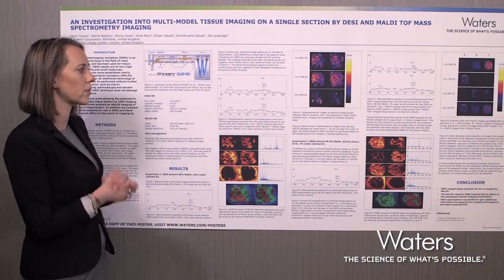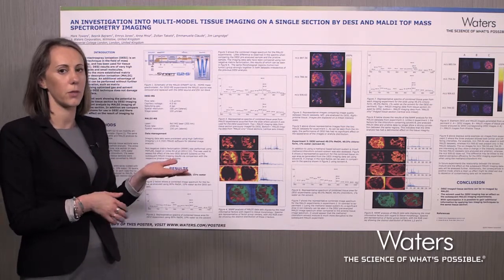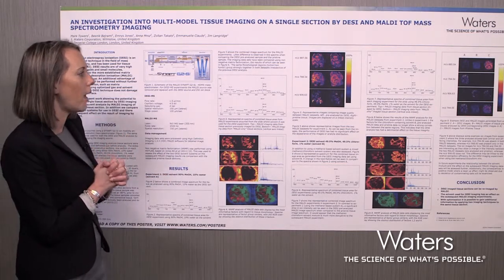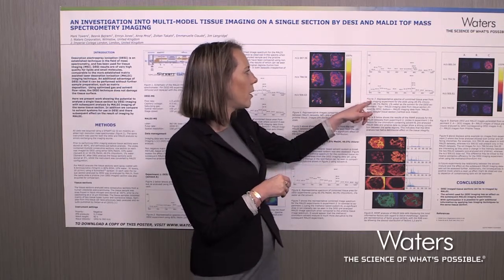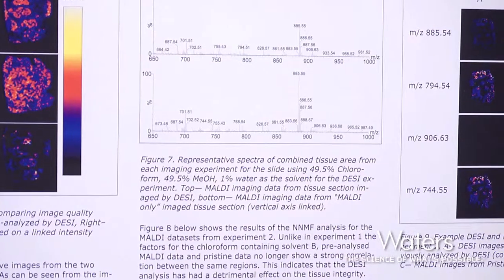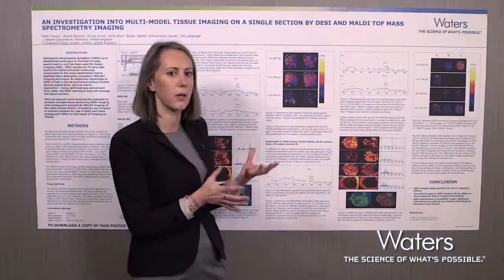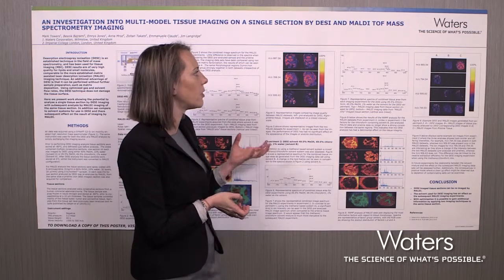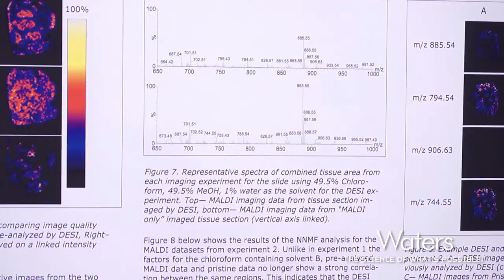Again, we used consecutive tissue sections: one where we did DESI followed by MALDI, and one where we only did MALDI, and we compared the MALDI data. The results are illustrated in figure 7, where we compare the combined spectra from the whole tissue section. We can see that the peak intensity for the MALDI dataset that had a DESI experiment before it is much lower compared to the MALDI-only dataset.